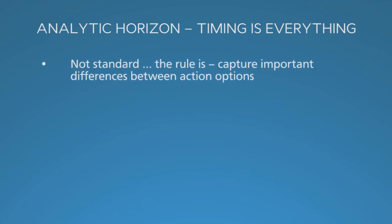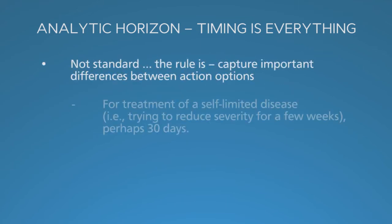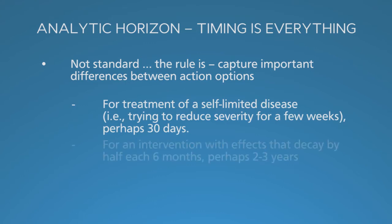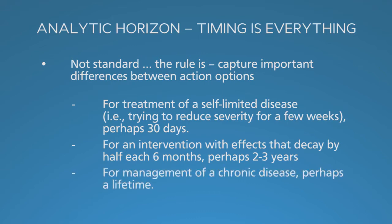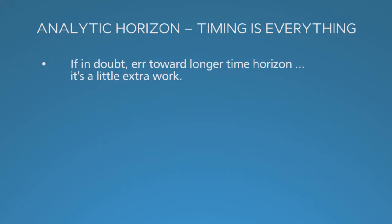For a rapidly resolving illness, 30 days may be sufficient. For an intervention that loses its effects within two years, a three-year horizon may be fine. For a chronic disease, the horizon should extend decades — a natural lifespan. When in doubt, go long. It's not much extra work, and missing delayed effects is a worse problem than introducing a little projection error.